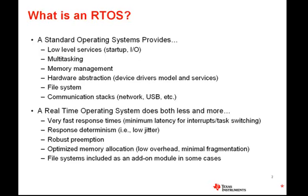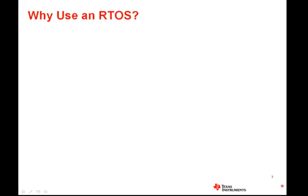Similar to a regular OS, memory management can also be a critical function, but there will probably be more vigorous requirements to allow for low latencies when allocating and deallocating memory, and to offer ways to avoid memory fragmentation, which can be a critical design aspect for embedded systems. File systems can also be needed for embedded systems, particularly if the system is using a hard drive, or more commonly these days, some kind of flash drive. It's often the case that embedded developers will start out with no RTOS at all and then begin using one when their design requires it.